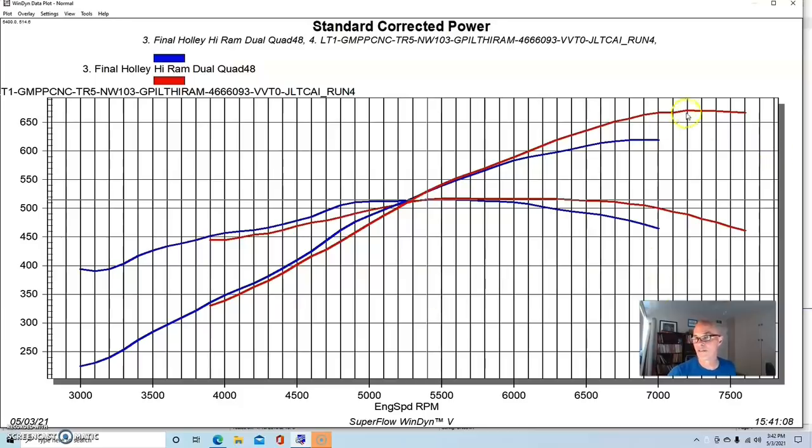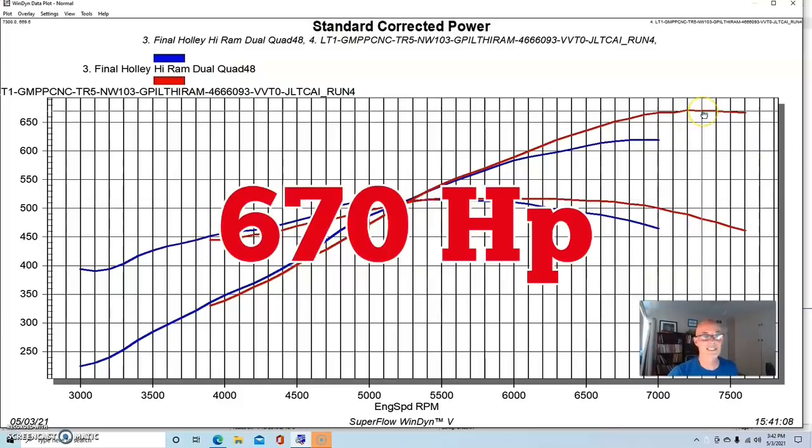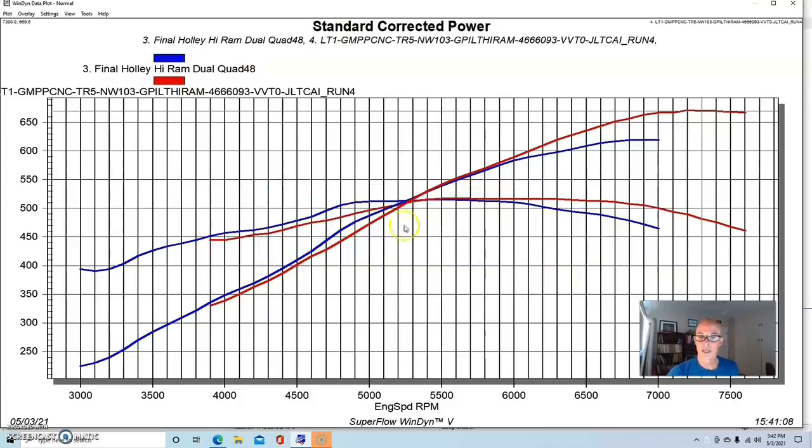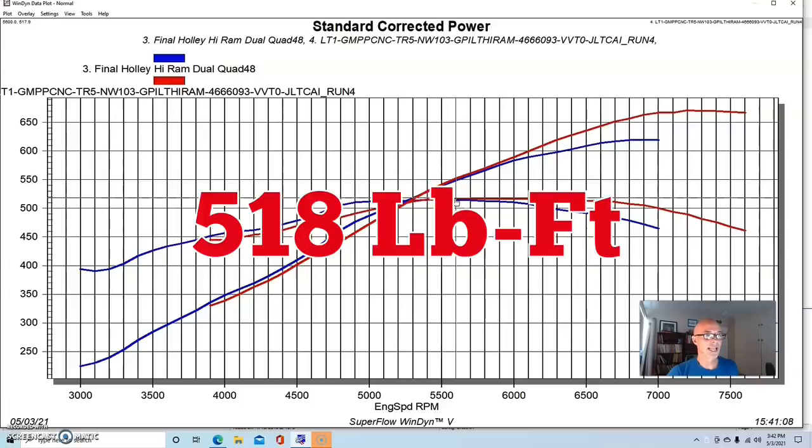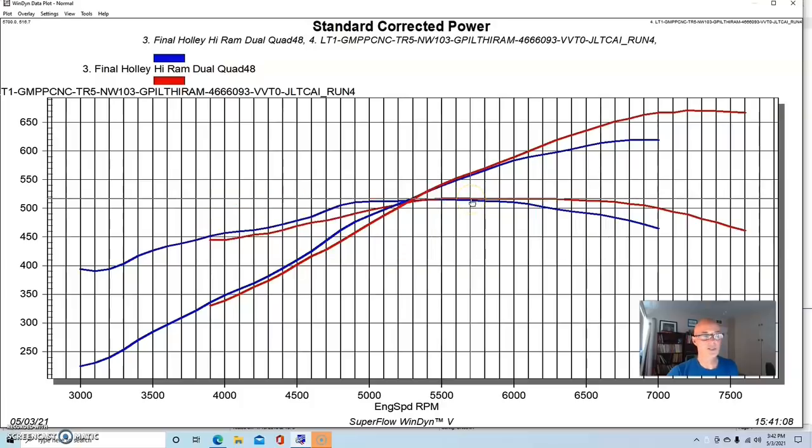If we take a look at the Gen 5 motor, this thing made 670 horsepower. Peak torque was about the same, 518 foot-pounds of torque. It just made power a little bit farther out on the short runner intake manifold. And even the variable cam timing didn't give it enough down low because the camshaft was a pretty good size.